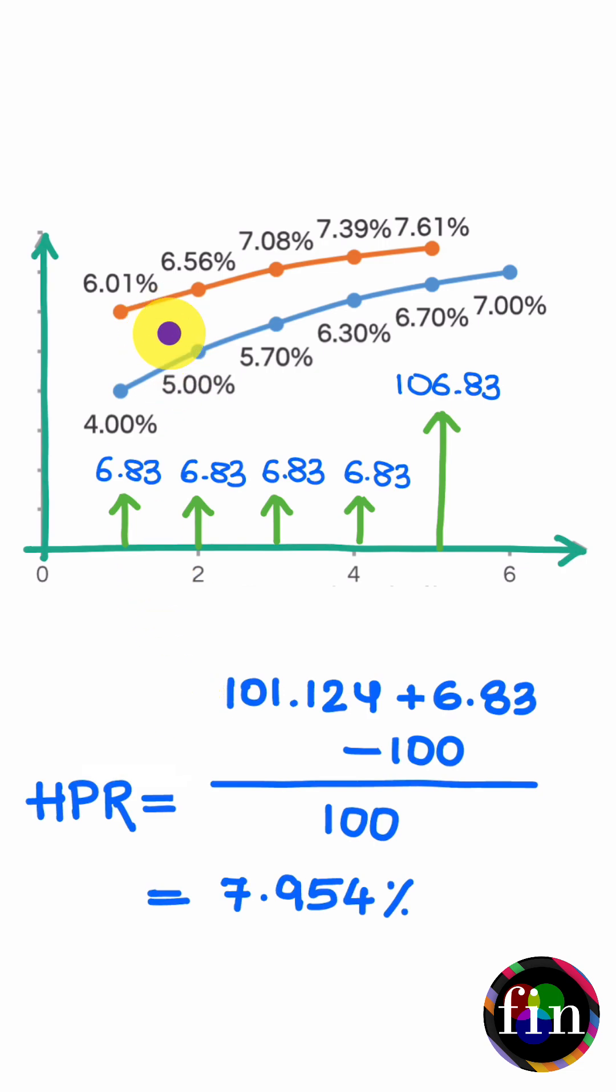If at the end of the first year my actual term structure of spot rates is not the priced-in or assumed term structure, but rather the same term structure that we started with, which means interest rates have not changed, if I were to repeat this exercise of finding the value of my bond one year from today, this time using this term structure, this value comes out to be higher, which makes the holding period return also go up.